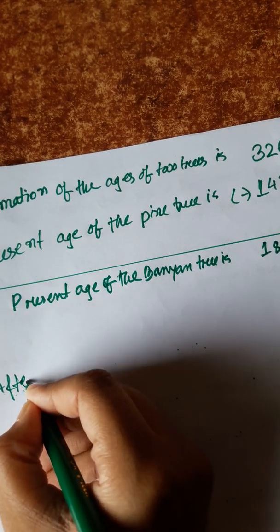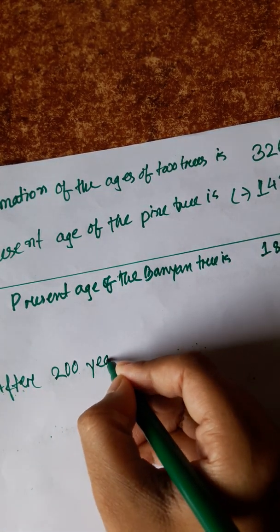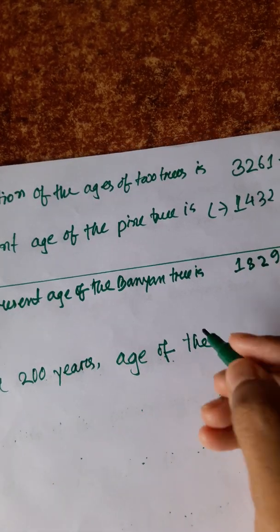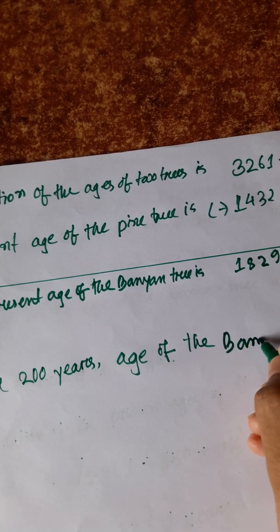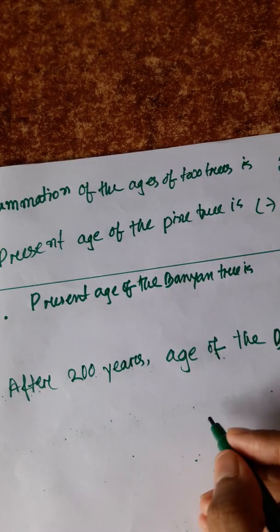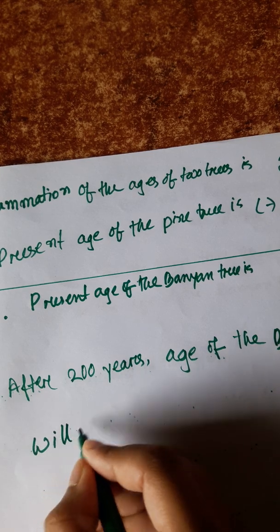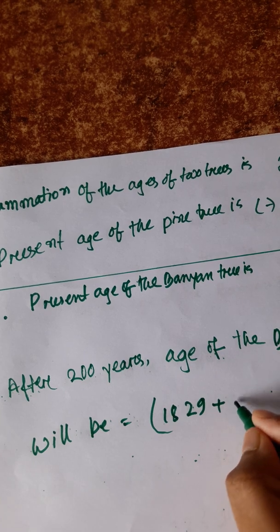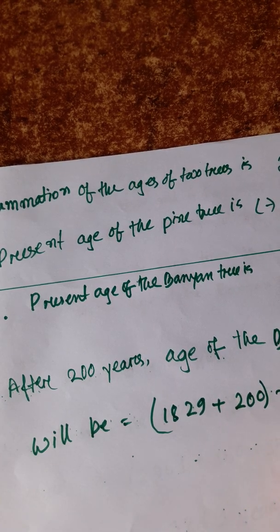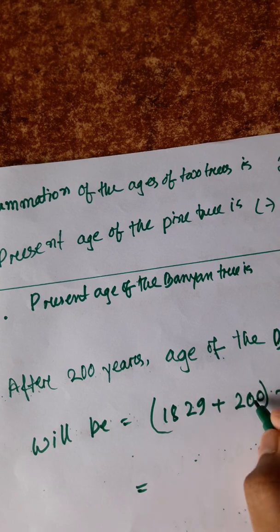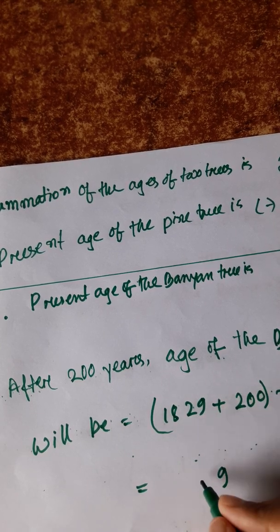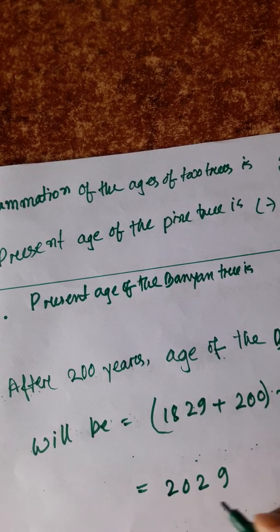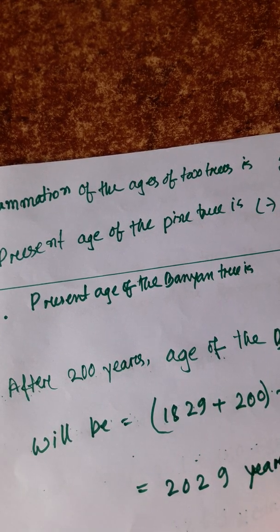After 200 years, the age of the Banyan tree will be 1,829 plus 200 years. We calculate: 9 plus 0 is 9, 2 plus 0 is 2, 8 plus 2 is 10 write 0 carry 1, 1 plus 1 is 2. The answer is 2,029 years.